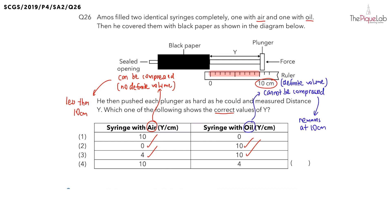Now I want you to focus on the syringe with air. If the distance y becomes 0 cm, what does this tell you about the plunger? This means the plunger is pushed all the way in. So if the plunger is pushed all the way in, do you think there is any air inside the syringe? No.